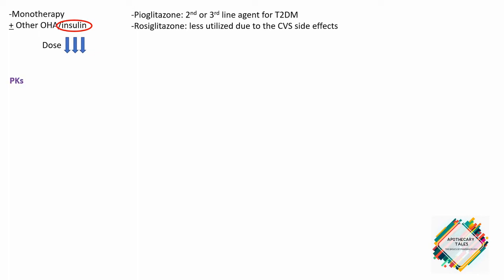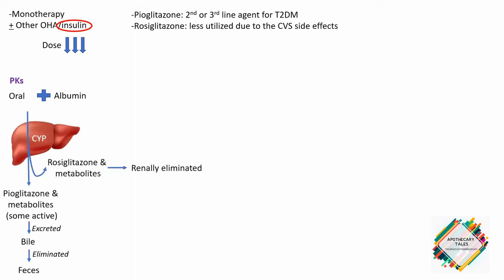Both drugs are very well absorbed after oral administration and are extensively bound to serum albumin. Both undergo extensive metabolism by different cytochrome P450 isozymes, and some metabolites of pioglitazone have activity. Renal elimination of pioglitazone is negligible, with the majority of the active drug and metabolites excreted in the bile and eliminated in the feces.